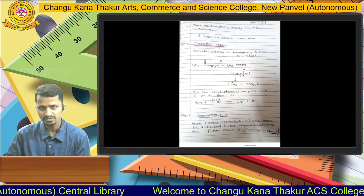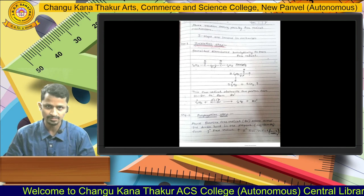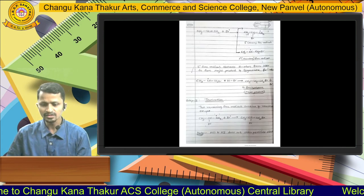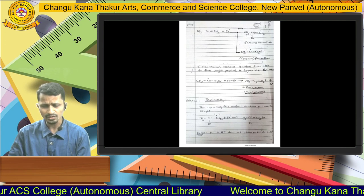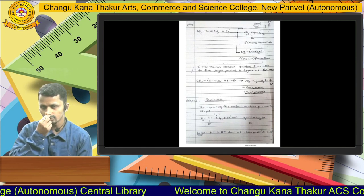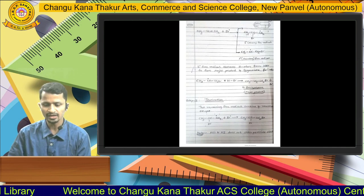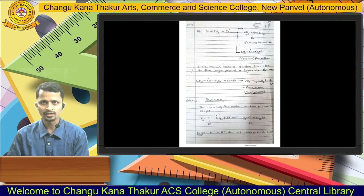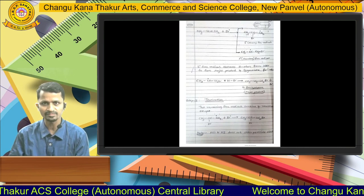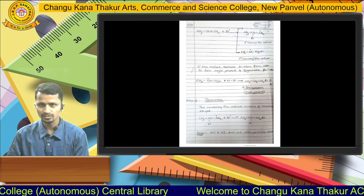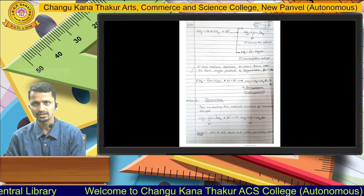In the second step, the propagation step, the growth of the chain reaction takes place. The bromine radical reacts with the starting compound, propene, and forms two intermediates: a primary free radical, where the unpaired electron is on carbon 1, and a secondary free radical, where the unpaired electron is on carbon 2. The secondary free radical is more stable than the primary free radical.